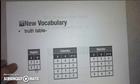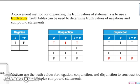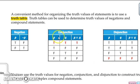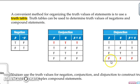We have new vocabulary: the truth table. A convenient method for organizing truth values of statements is to use a truth table — similar to Punnett squares in science class. For negation: if the original statement is true, the negation is false, and vice versa. For conjunction: both P and Q must be true for the conjunction to be true; otherwise it's false. For disjunction: it works almost in the opposite way — both statements must be false for the disjunction to be false.